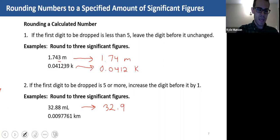32.9 because the eight here, the first number to be dropped, is more than five, so we increase the digit before it by one. Same idea here.